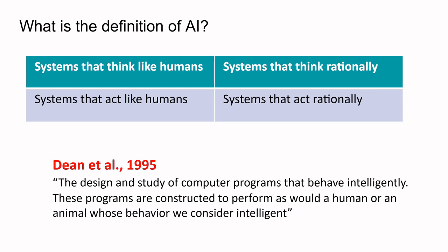The second definition is about the design and study of computer programs that behave intelligently. These programs are constructed to perform as a human or animal behavior we consider intelligent. If our computer program is performing or behaving intelligently — the same way a human thinks or behaves — then you can say that your machine is intelligent.